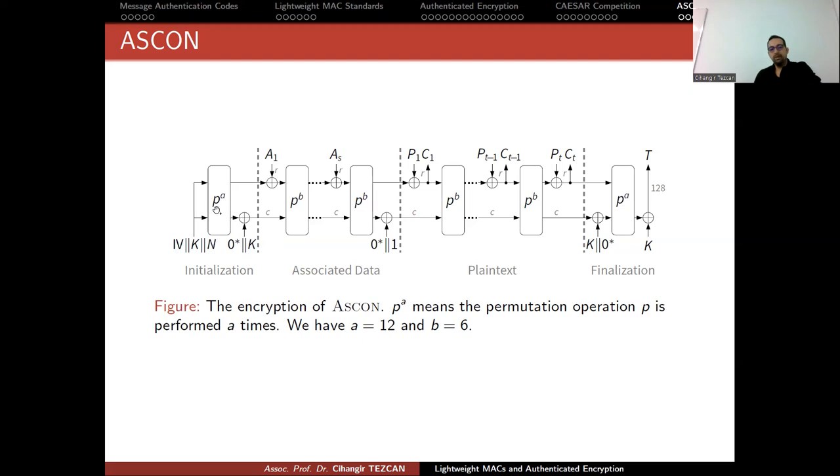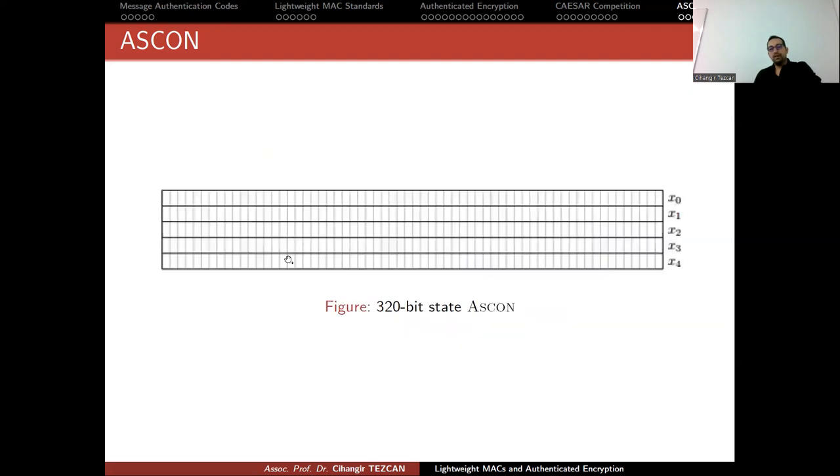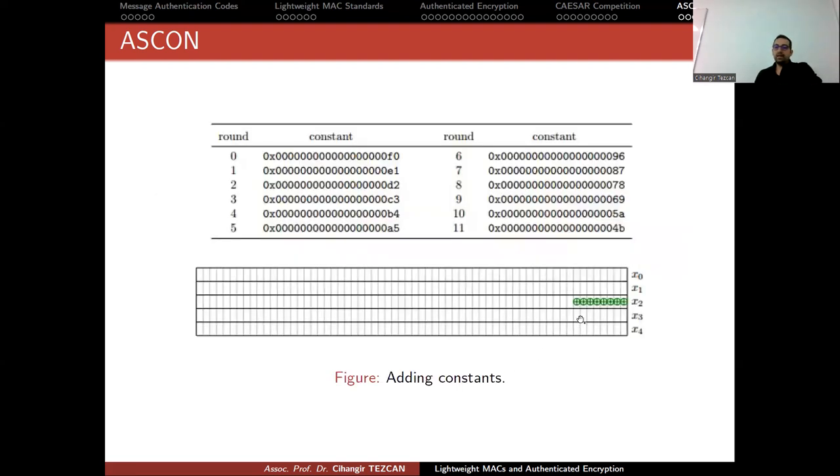We call this P, permutation. Since the internal state of ASCON is 320 bits, we represent it with five rows and 64 columns. This way it makes 320 bits. We represent the rows with X0, X1, X2, X3, and X4. At each round you start with adding constants to these 8 bits. The constants are simple like this.